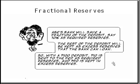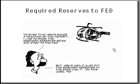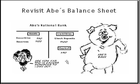When a customer makes a deposit, Abe's bank will have to save a fraction of the deposit — say ten percent — as required reserves. The rest of the deposit will be kept as excess reserves that the bank can loan out. So with a hundred dollar deposit, ten dollars is sent to the Fed as required reserves and ninety dollars is kept in excess reserves. Abe lists a hundred dollars as reserves on his balance sheet, but only ninety of those are excess reserves.